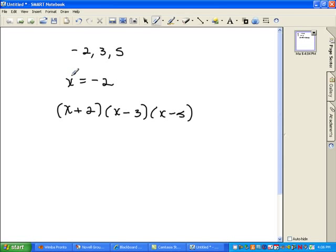Once we get it that far, we simply multiply everything out. x plus 2 times x minus 3, when we FOIL it, we get x times x is x squared, x times negative 3 is negative 3x, 2 times x is 2x, and 2 times negative 3 is negative 6. Combining like terms, we get x squared minus x minus 6.